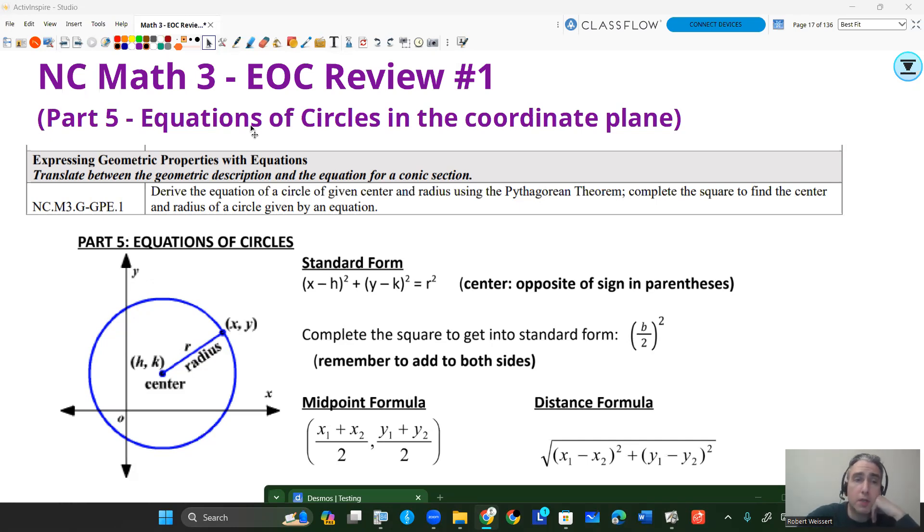We're going to be going over this part of the NC Math 3 standards, and it's the equation of the circle formula in standard form. We're also going to be showing how to get into standard form from a more expanded form. You may come in handy to use midpoint and distance formula in these problems, although I don't think in these particular ones we will use them. But here they are just in case you need them for any of the practice problems you do.